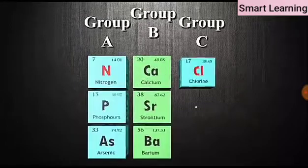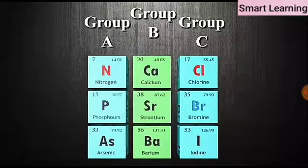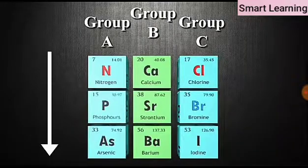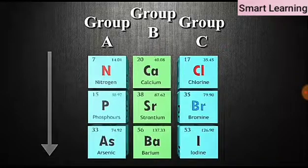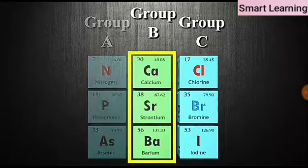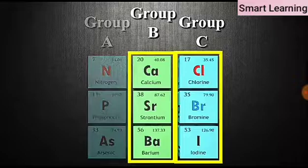Here are some groups of three elements. These elements are arranged downwards in order of increasing atomic masses. Here, groups B and C form Dobereiner triads.